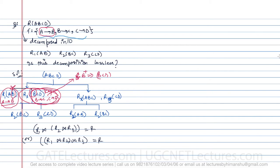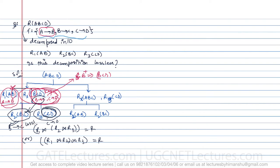Further, Rx(B,C,D) is broken into R2(B,C) and R3(C,D). The functional dependency B→C is valid for R2 and C→D is valid for R3. The common attribute is C, and C is a key attribute in at least one of the tables, so this decomposition is also lossless.